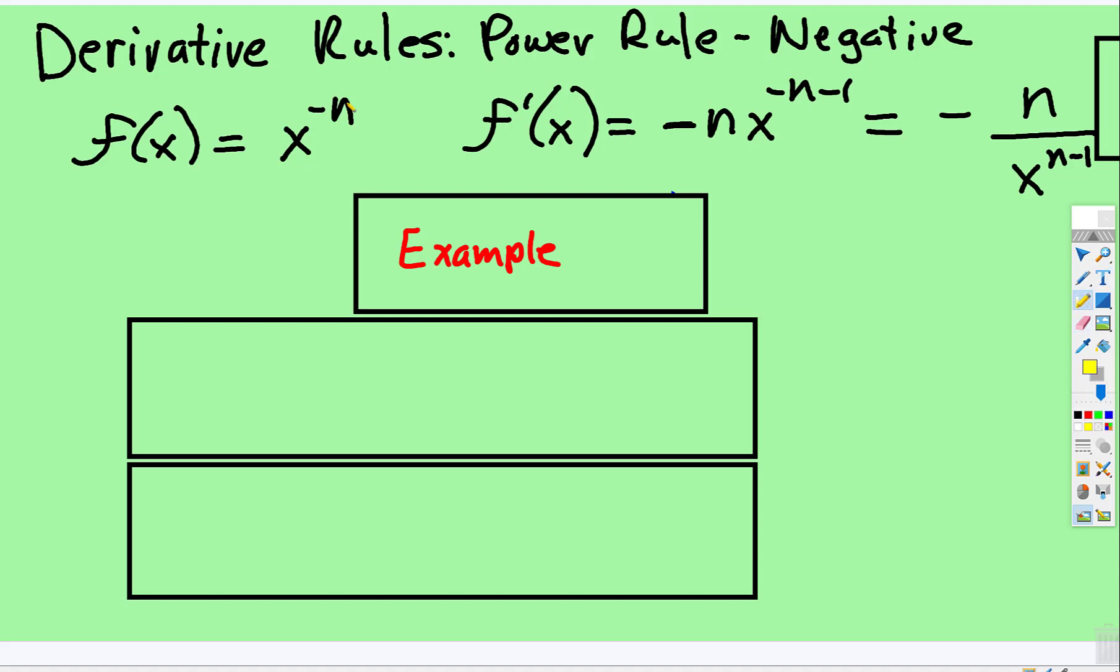This exponent right here gets brought down in front, and then you have that exponent subtract 1. Well, that's going to be a negative exponent now. Remember, with negative exponents, you rewrite it as a positive exponent.